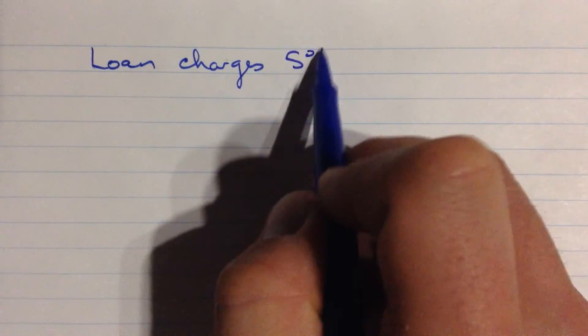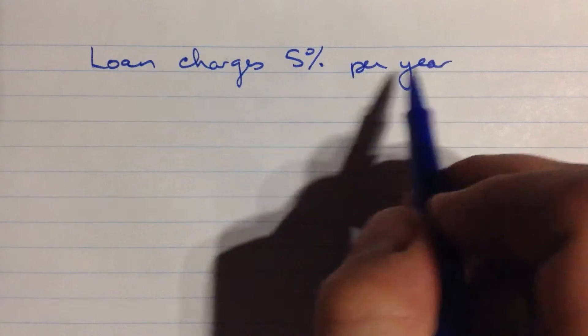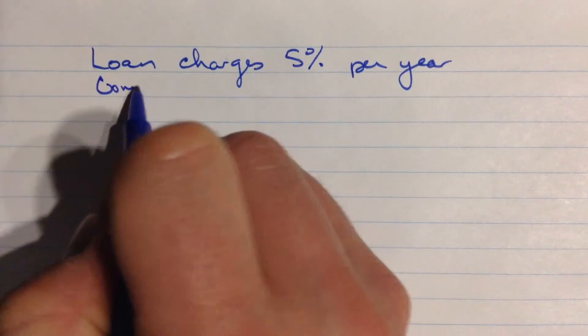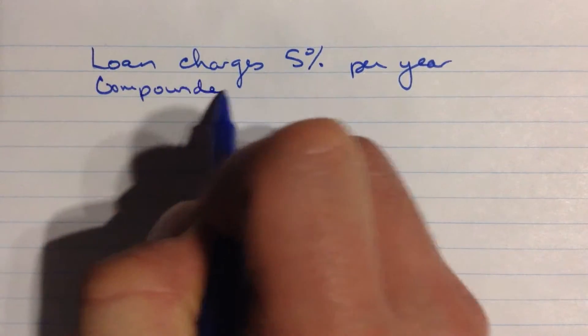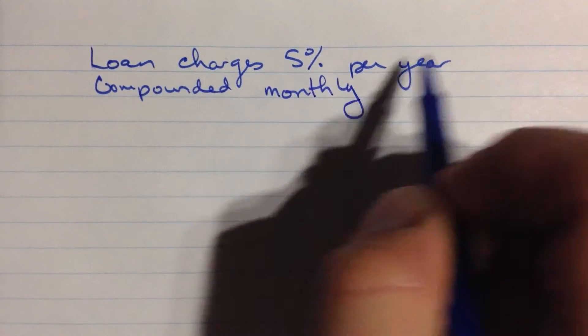So let's say you have a loan for, your loan charge is 5% per year. And it's compounding monthly, so more frequently.